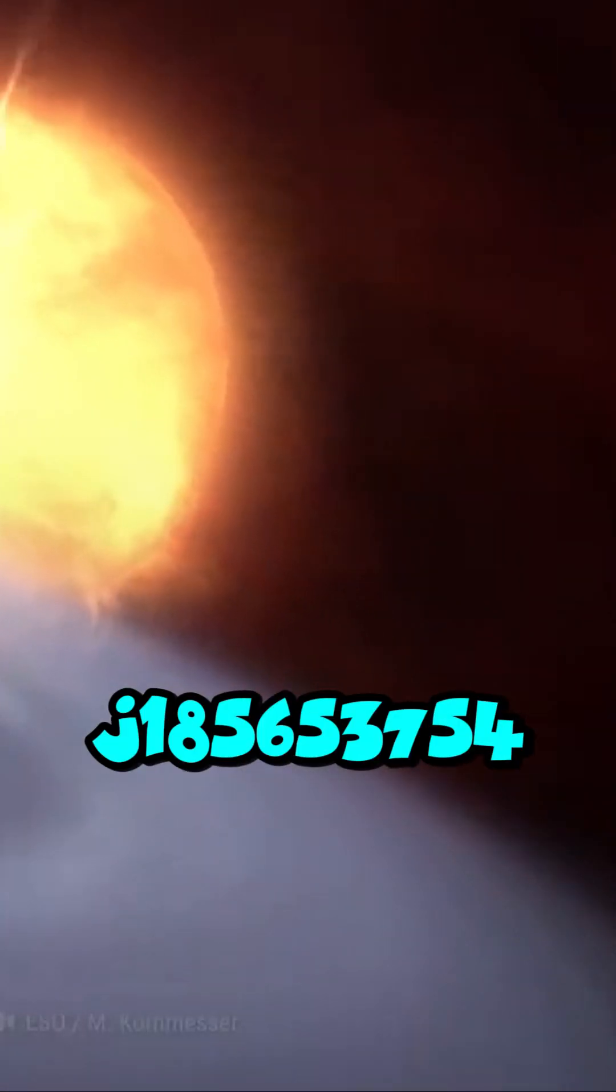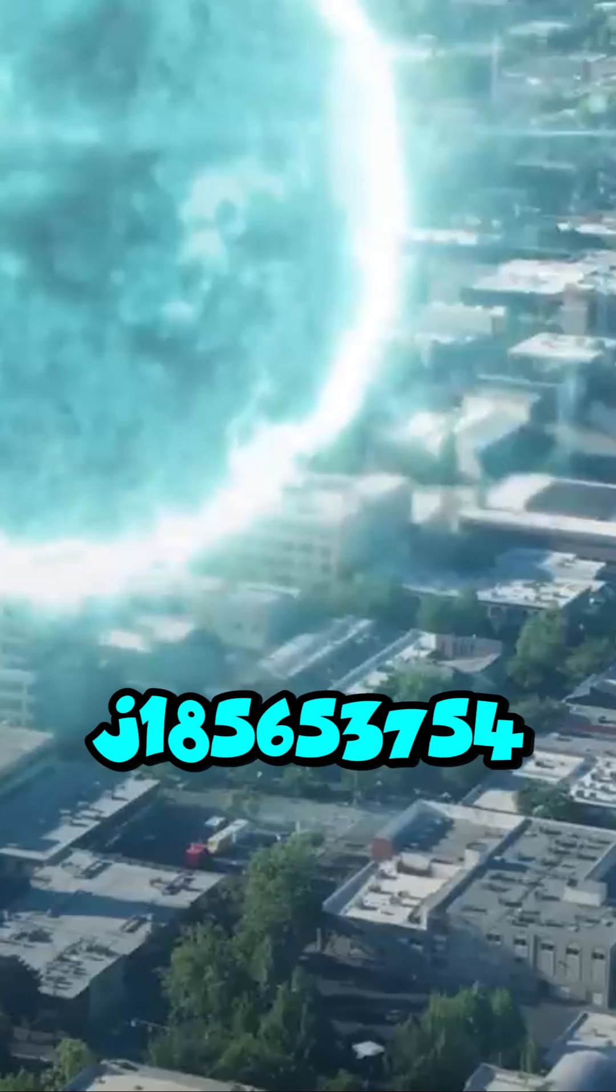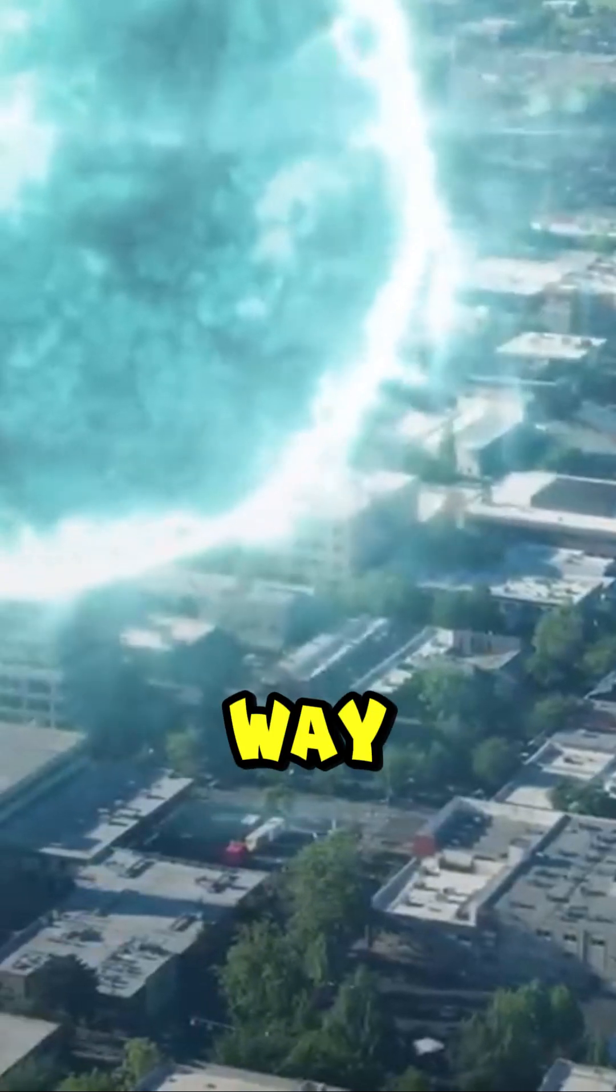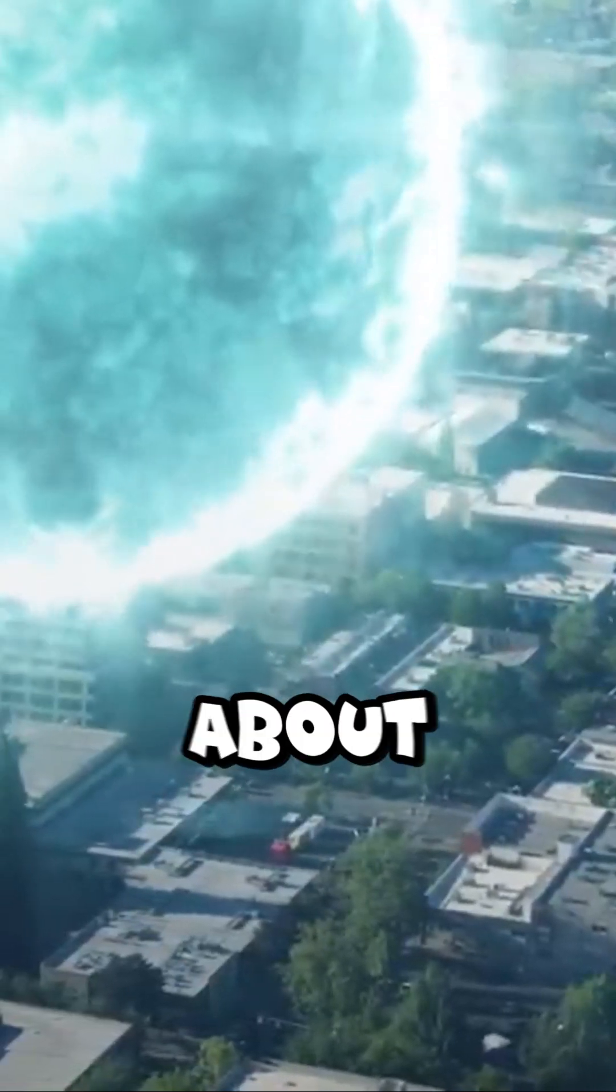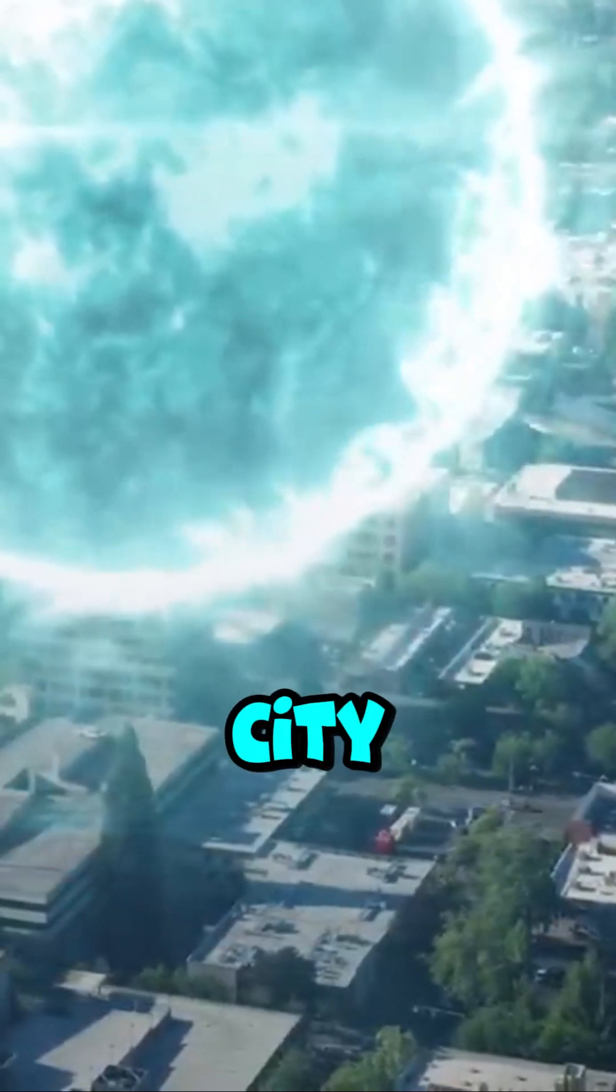Unlike other neutron stars, Arx J185653754 is way too small. Only about 15 miles across, roughly the size of a city, yet denser.